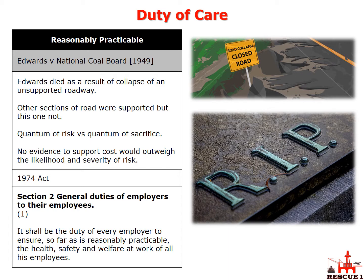A bit of background: Edwards died as a result of a collapse in an unsupported roadway. Other sections of this road were in fact supported but this particular section was not. Lord Asquith stated that the quantum of risk versus the quantum of sacrifice should have been reviewed. He found in favor of Edwards because the National Coal Board could not provide any evidence that the cost to support this section of roadway would outweigh the benefits of preventing injury or death. Other sections of the roadway were supported adequately, but this section clearly had a higher chance of collapse and required those supports.